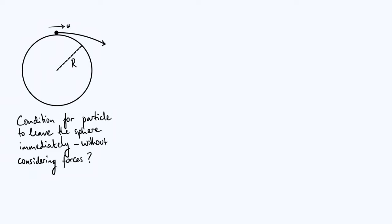Hello everyone, so suppose that you have a particle sitting at the top of a sphere of radius r, and you give the particle some initial impulse such that it starts moving horizontally with a velocity of u. Now the question that we want to address in this video is how fast does that particle have to be going, in other words what's the condition on u, in order for the particle to leave the surface of the sphere immediately rather than starting to slide down the surface of the sphere.